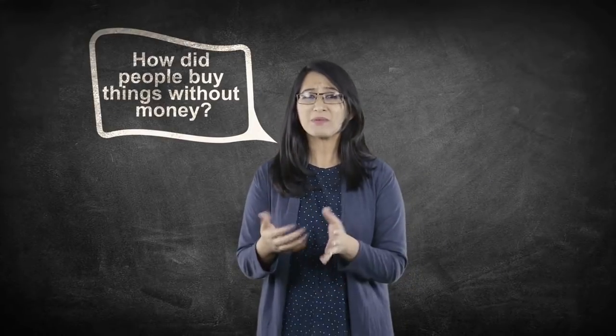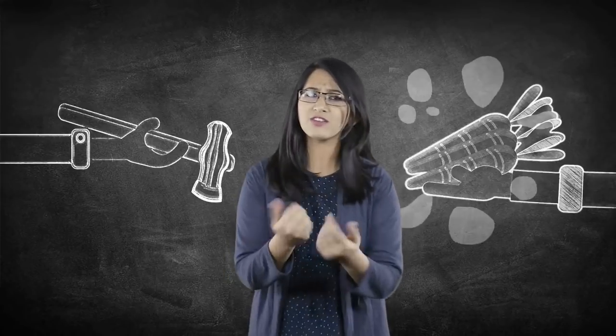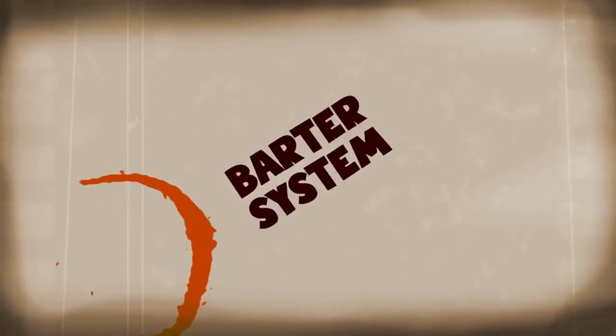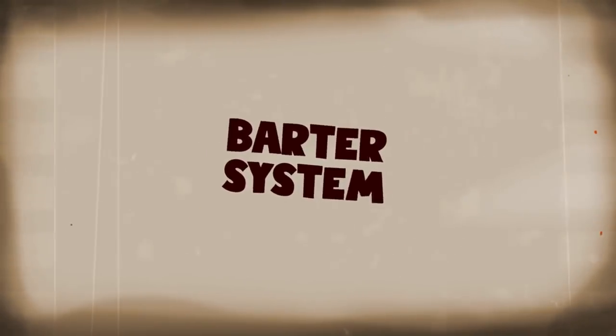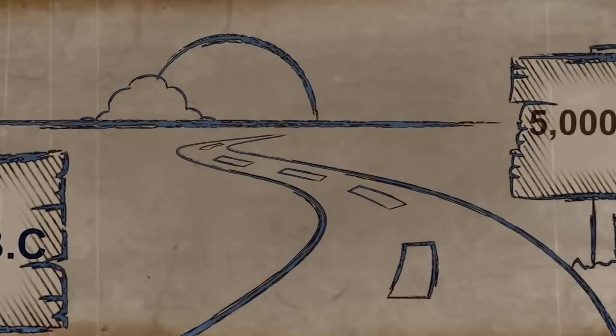So how did people buy things without money? Long before money was even invented, people used to exchange goods and services for other goods and services. This system was known as the barter system and it goes way back to 6000 BC.